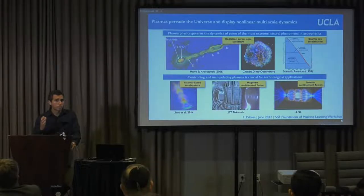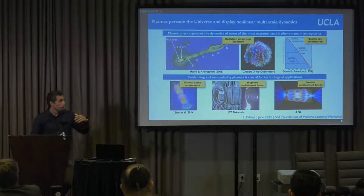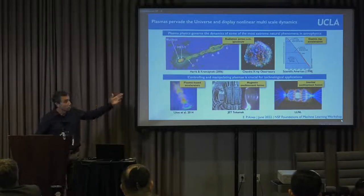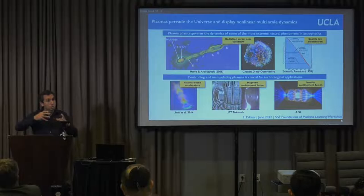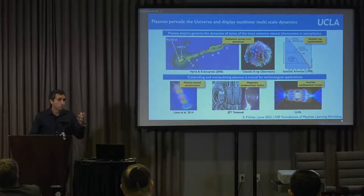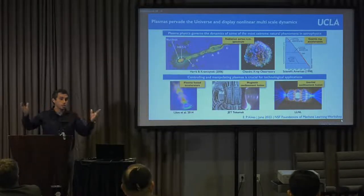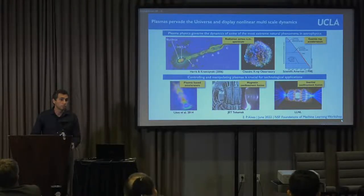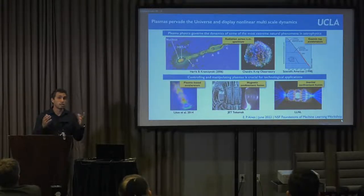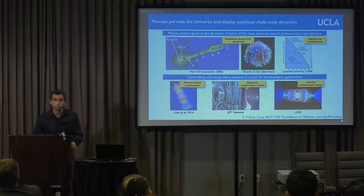Some of the most spectacular manifestations of plasma physics can be found in the high-energy universe, like stellar explosions or the launching of relativistic outflows of plasma from the centers of active galaxies. One important puzzle is that when we look at these objects, we see them shine across the electromagnetic spectrum. They're also known to be sources of the most energetic particles in the universe, and understanding how these systems produce radiation and accelerate particles is a big challenge.